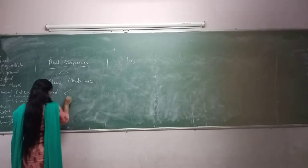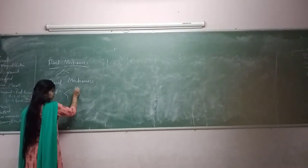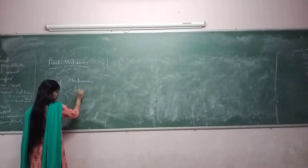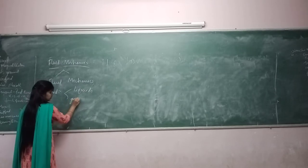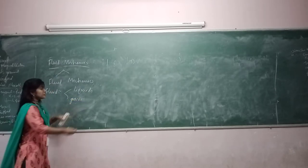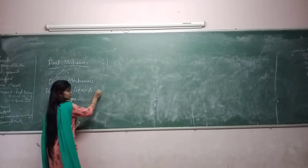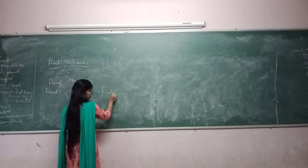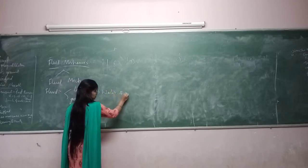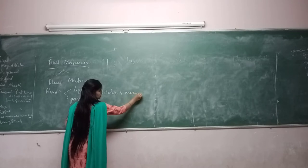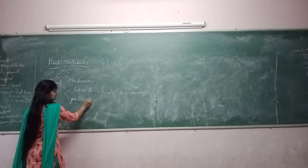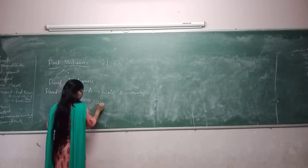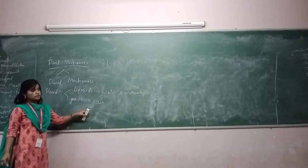In fluid, we have two substances: one is liquid and another one is gases. Examples for liquid are water and mercury. Examples for gases are air.